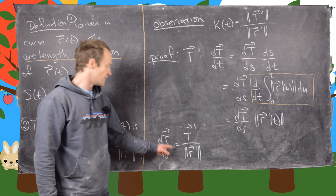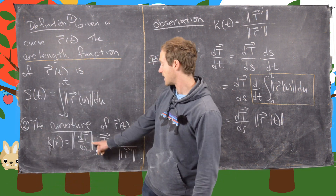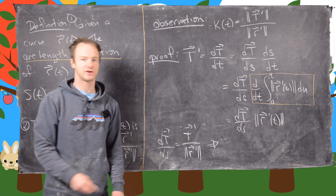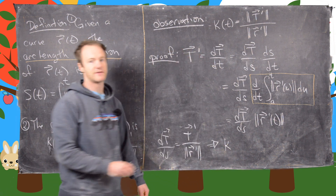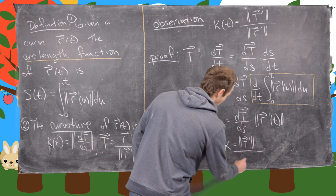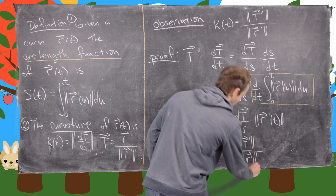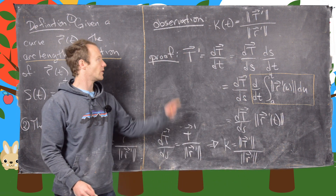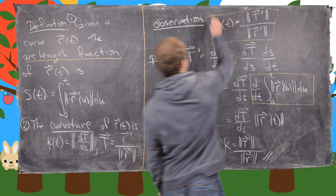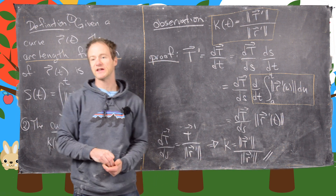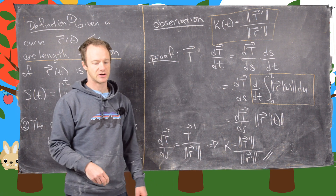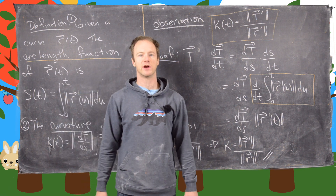We can now solve for dT by ds: it equals T prime divided by the magnitude of r prime. Since kappa is defined as the magnitude of dT/ds, taking the magnitude of both sides gives kappa equals the magnitude of T prime divided by the magnitude of r prime. This is a much more usable formula because you don't have to calculate the arc length function — you just need any parameterization of the curve.